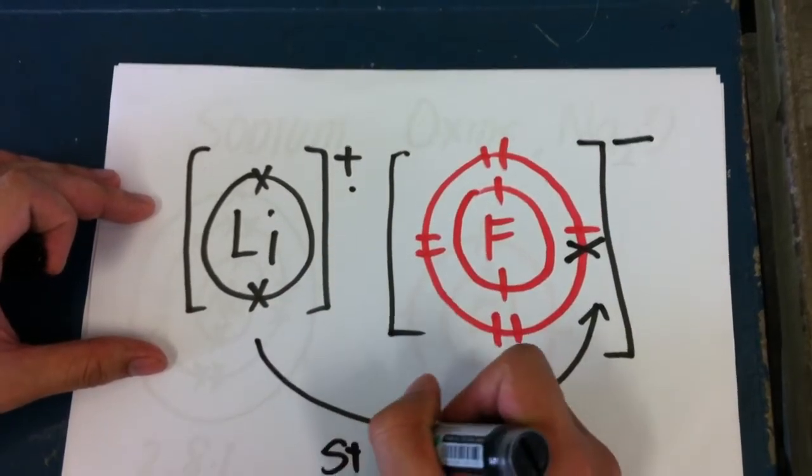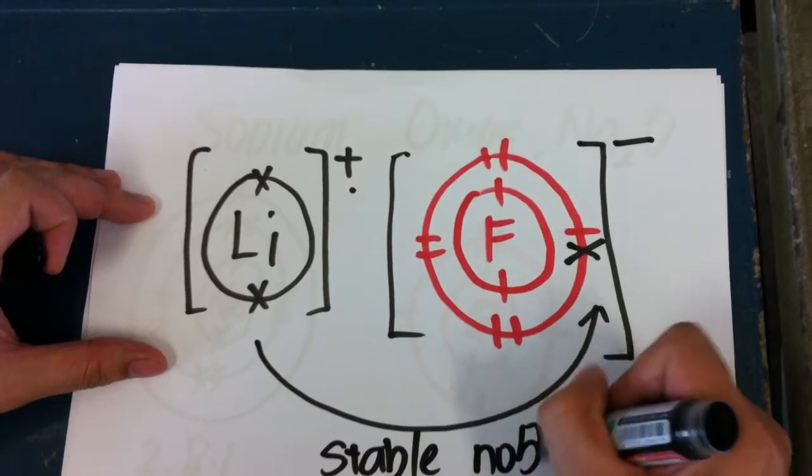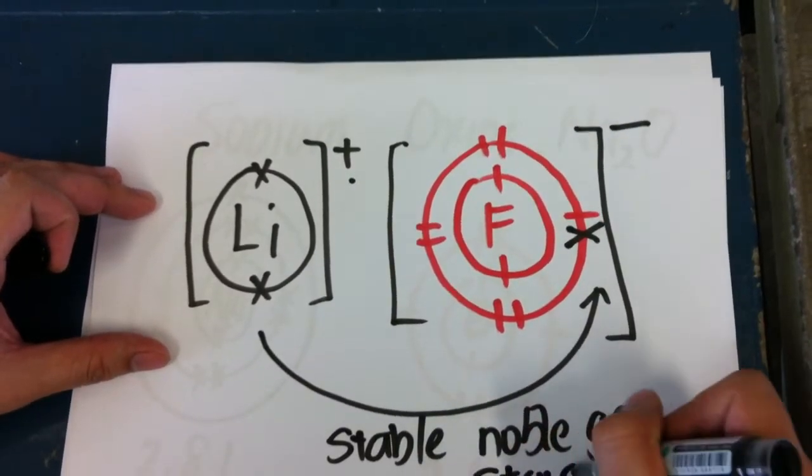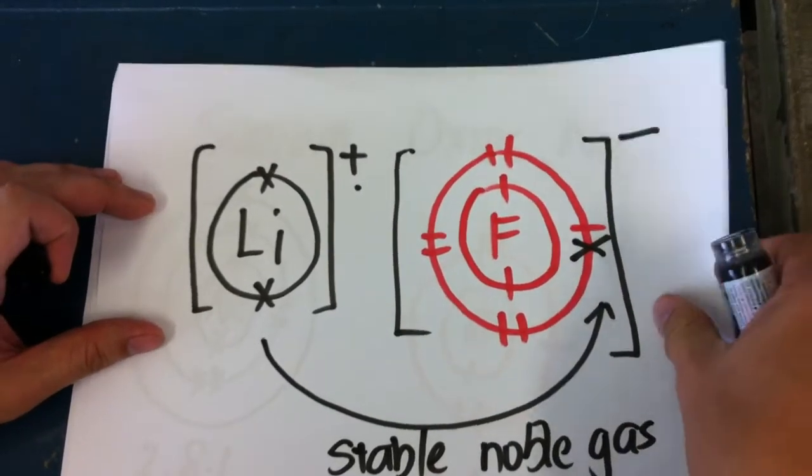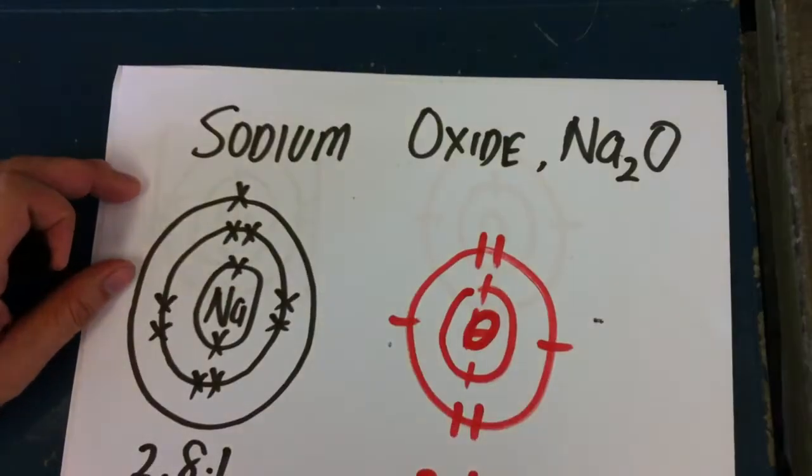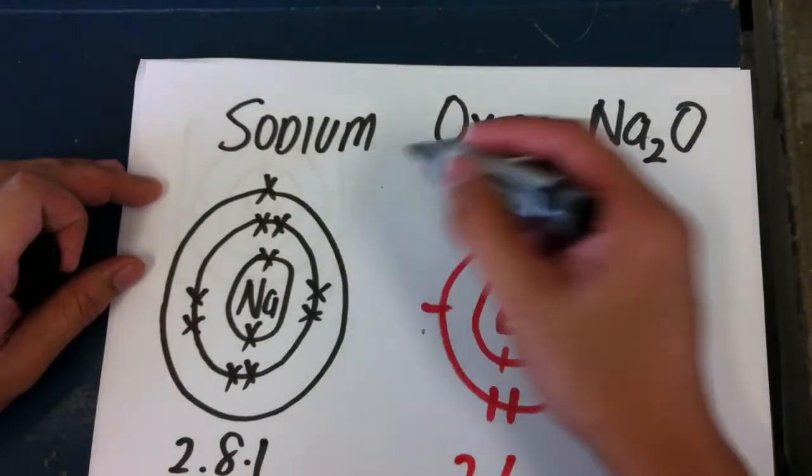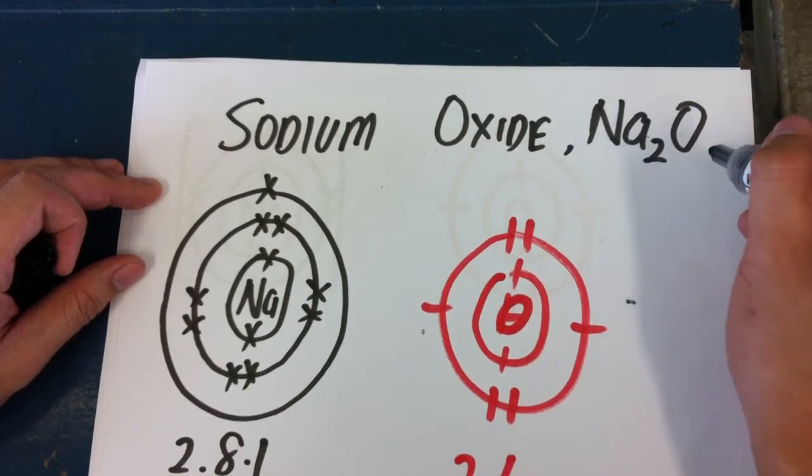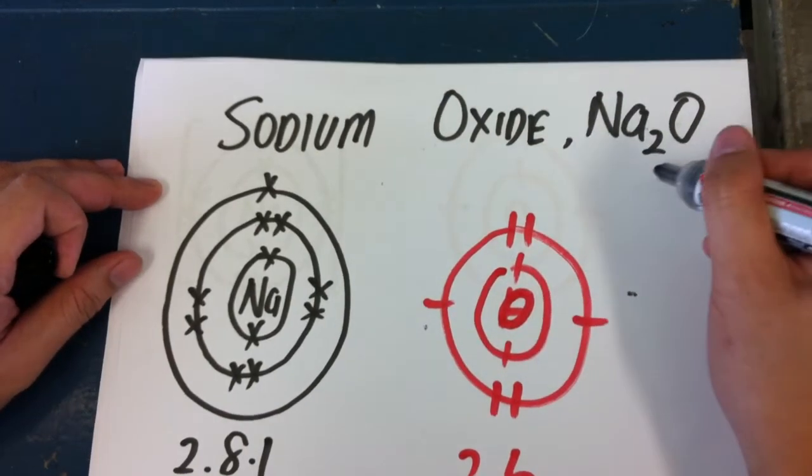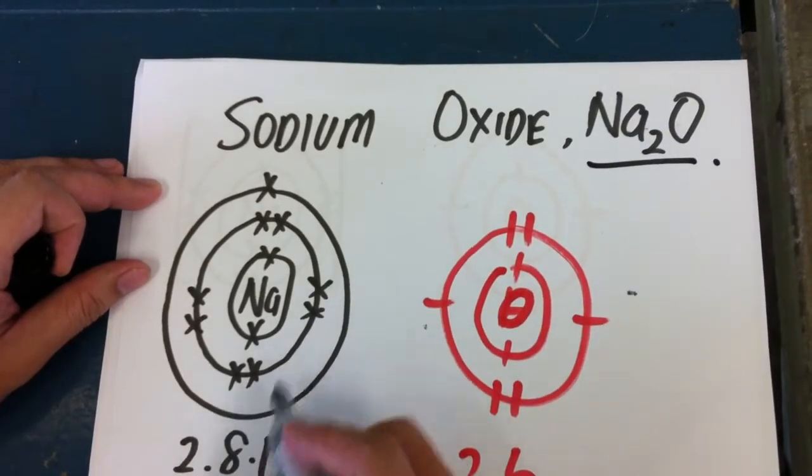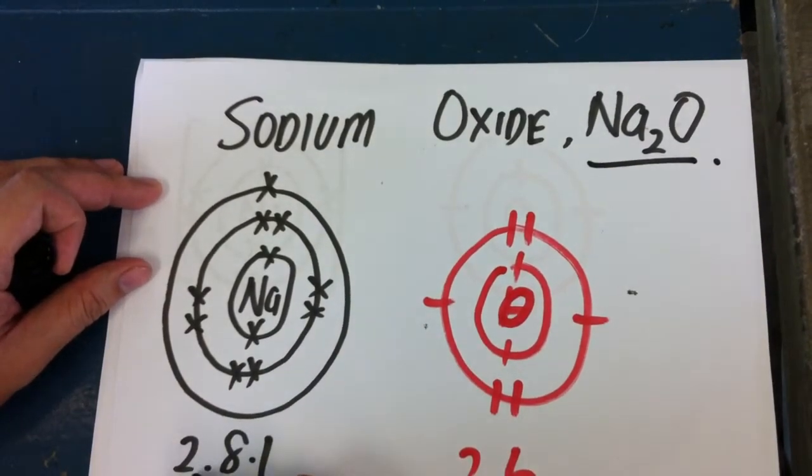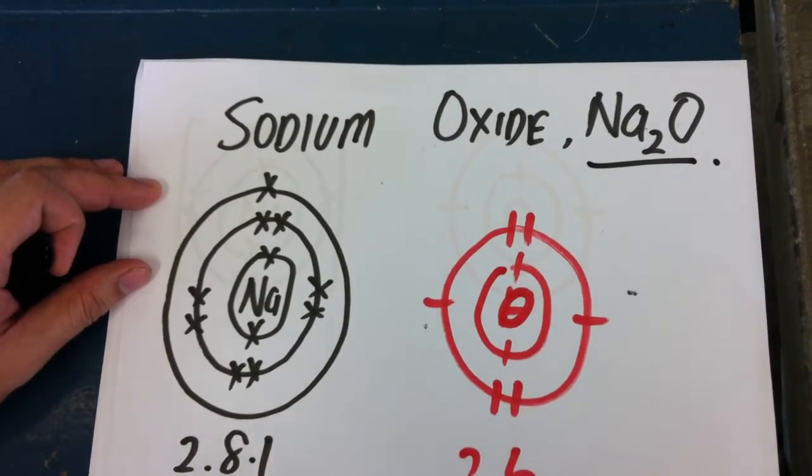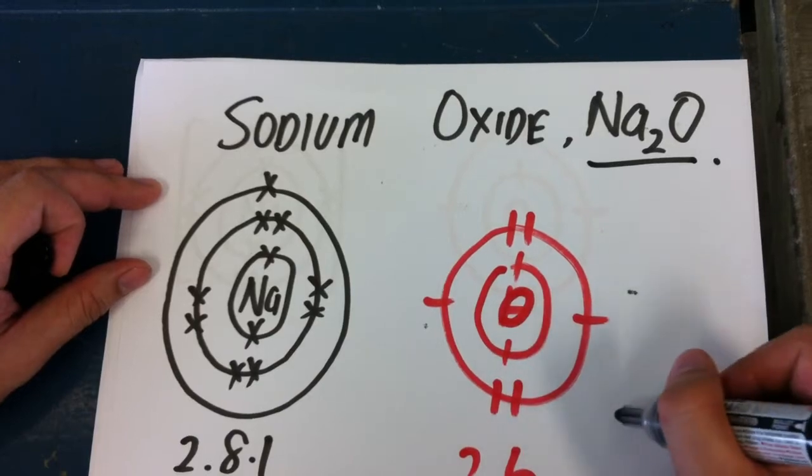Now let's look at the next one: sodium oxide. Sodium oxide has a formula of Na2O. Why does it have a formula of Na2O? We'll find out now. Sodium has an electronic configuration of 2.8.1, oxygen has 2.6. Oxygen needs two more electrons.